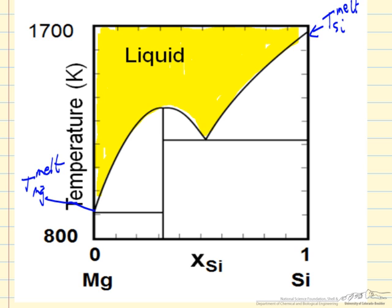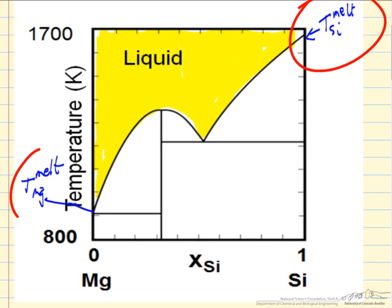I have labeled the melting point for silicon and the melting point for magnesium, and we have liquid in this region. The first thing to notice is that the temperature we have solidification or melting is a function of the composition.